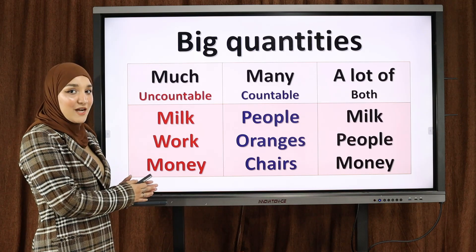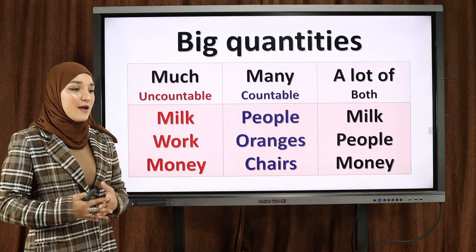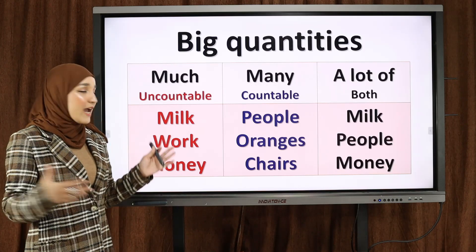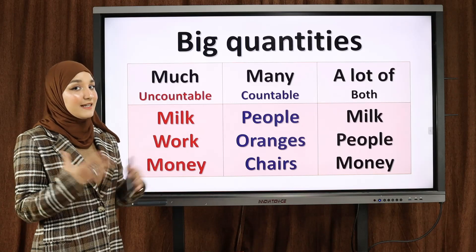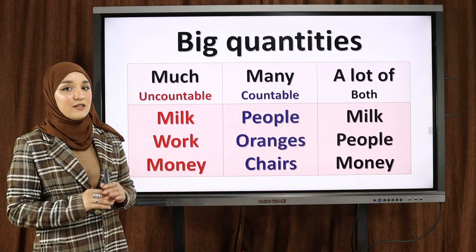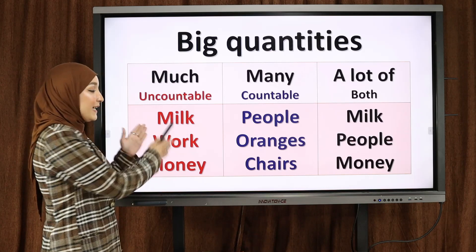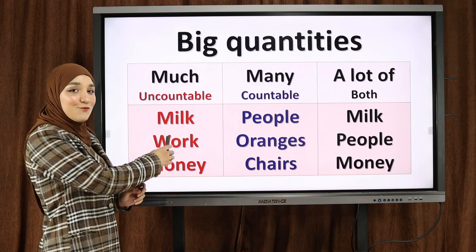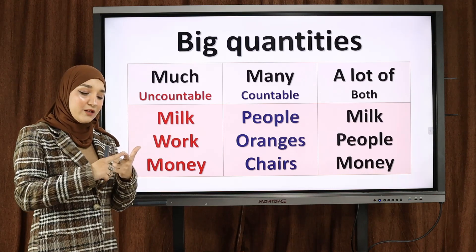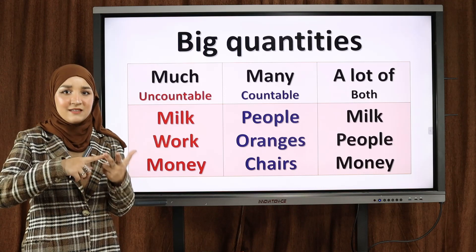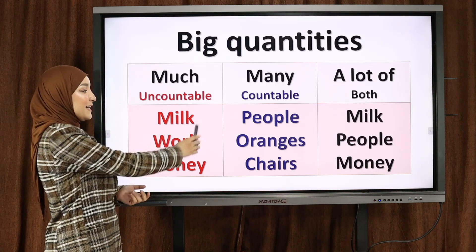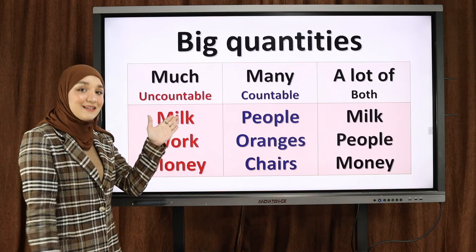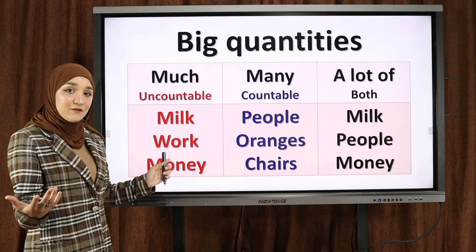Let's talk about much. For example: 'How much milk do you drink?' — كم من الحليب أنت تشرب؟ Or: 'We have much milk' — لدينا الكثير من الحليب. Or: 'We don't have much milk' — ليس لدينا الكثير من الحليب. Milk is uncountable — we don't say one milk, two milks. We cannot add S to milk.